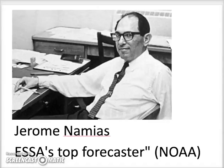Jerome Namias was born in Bridgeport, Connecticut in 1910. He trained at the University of Michigan, and in the late 1930s did research at the Massachusetts Institute of Technology. From 1941 to 1971 he was chief of the Extended Forecast Division of the U.S. Weather Bureau. In the 1940s he developed the five-day forecast; in the 1960s he developed monthly and seasonal forecasts and analyzed the interactions between the atmosphere and ocean, particularly the role of Pacific sea surface temperatures and El Niño on the climate of North America. In 1971 he joined the Scripps Institution in La Jolla, California and established the first experimental climate research center.